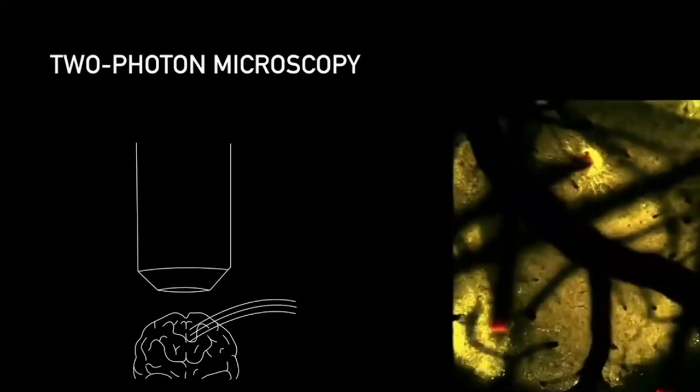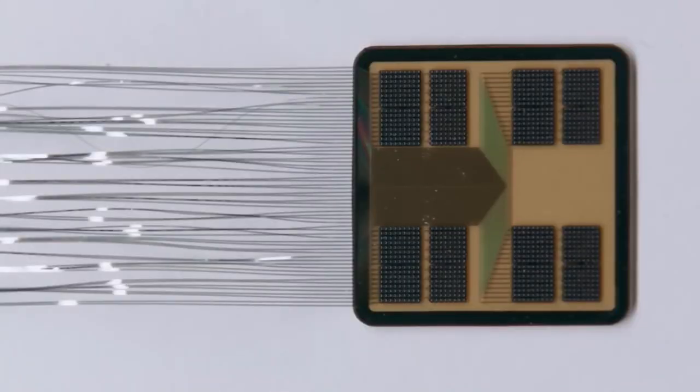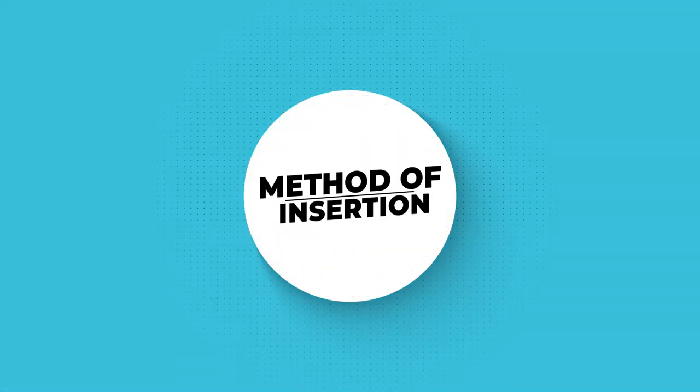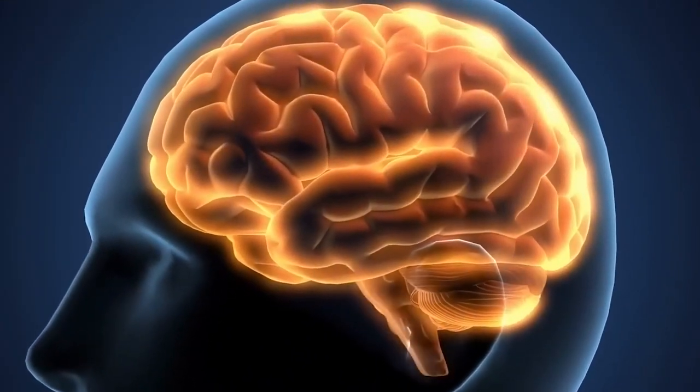For any device that will spend a significant amount of time lodged in a person's brain, floppy wires may be a preferable option because they're less likely to irritate or harm the tissue. Method of insertion. Floppy wires have a significant drawback in that they can be challenging to thread into the brain.